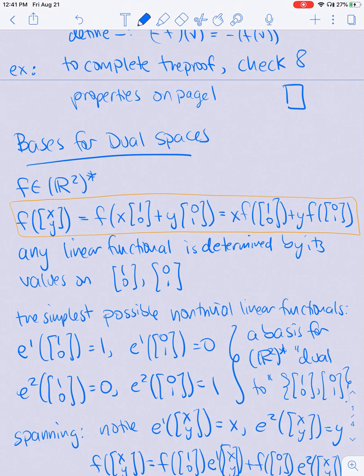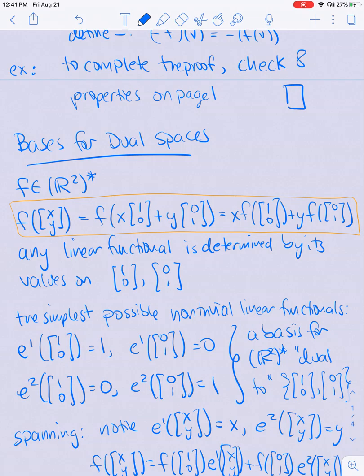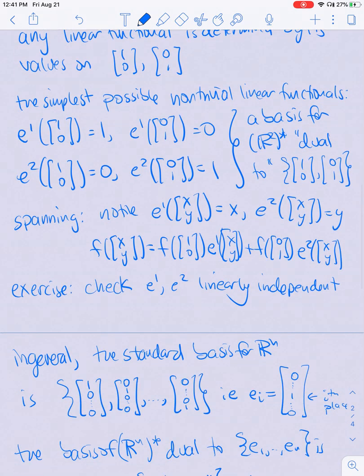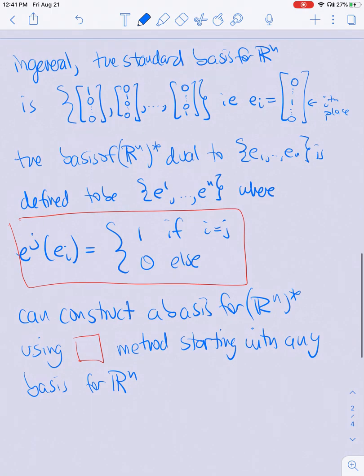I could have used any basis of R². And so if I go through all of this with any basis of R², I could construct a different basis dual to a different basis of R². Okay,